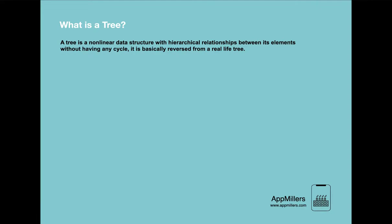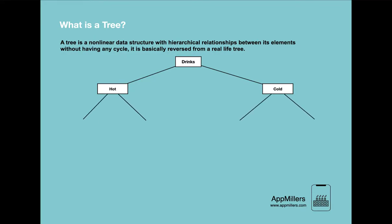Let's say we are in a café and want to order a drink. We open the menu and see two options: hot drinks and cold drinks. Within these options we have multiple subcategories. If we want hot drinks, we have two options: tea or coffee. Similarly, for cold drinks we have two options: alcoholic or non-alcoholic.